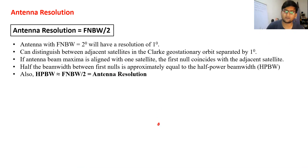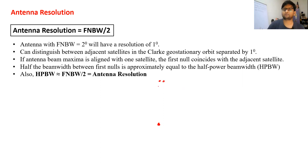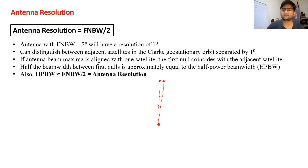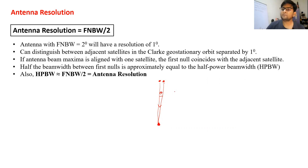Let us understand this with an example. Suppose you have a receiving antenna — basically a DTH or television antenna — and suppose you have two TV satellites in the geostationary orbit. The first TV satellite is in one direction and the second TV satellite is in another direction. The angle between the two lines connecting these satellites to the receiver antenna is theta.